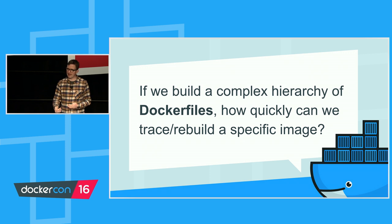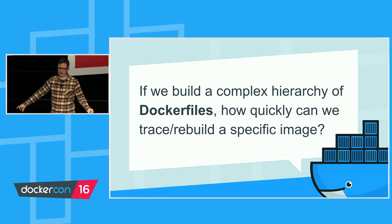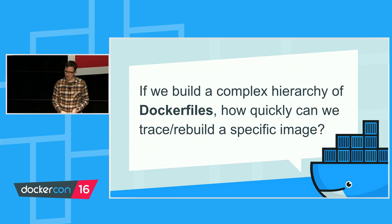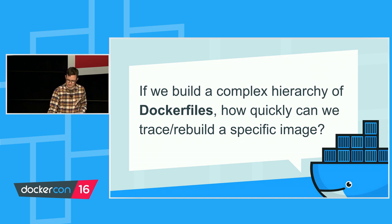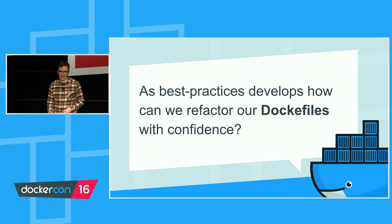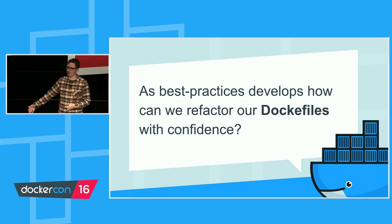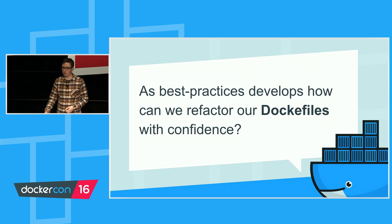If you take the inheritance approach and build out the all-conquering large complex hierarchy of Dockerfiles — inheriting from inheriting from other ones — how can you reason about that? How can you trace it? How can you rebuild a specific image, and how long does that take? Because ultimately if you have this big nested set, you're probably going to pay a performance penalty. As best practices have evolved for how we're using Dockerfiles and building images, how can I refactor potentially all of those Dockerfiles with confidence that I'm not breaking something, but also that I am keeping up with best practice?